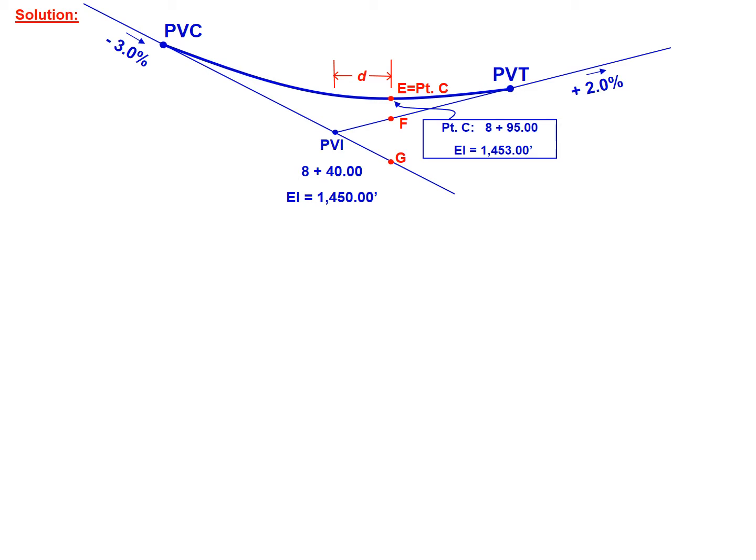To solve this problem, we're going to take our given information and overlay that with the important points that we need to know for passing a curve through a fixed point. We need to know the distance from the PVI, that's the distance D, and then we need to know the elevation at three points: the point on the curve E, the nearest tangent which is point F, and then the point on the further tangent which is point G.